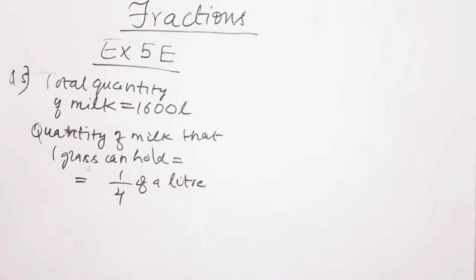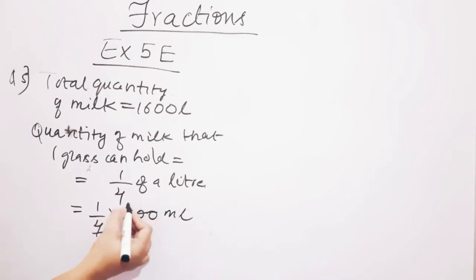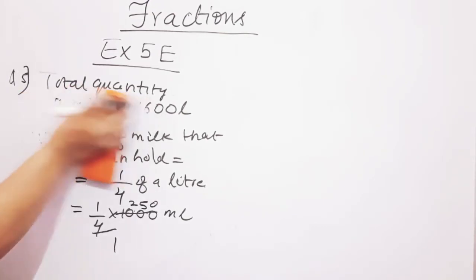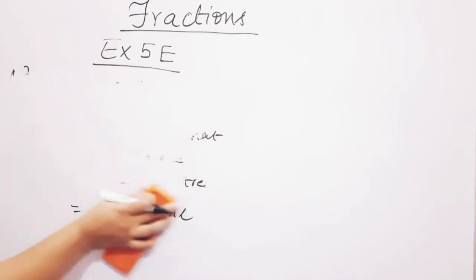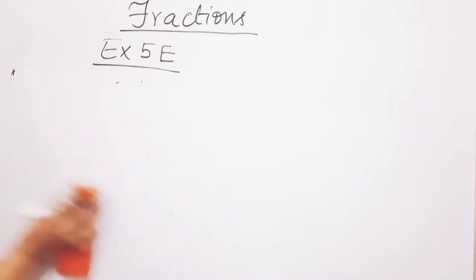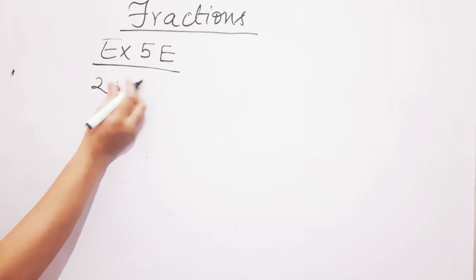There are 1000 millilitres in 1 litre. So 1/4 of 1000: dividing 1000 by 4 gives us 250 ml. That means one glass can hold 250 ml of milk. If you know the answer, please pause the video and reply in the comment section. Yes, 1 glass contains 250 ml of milk.